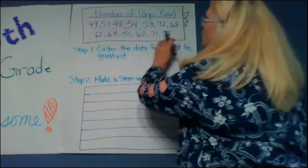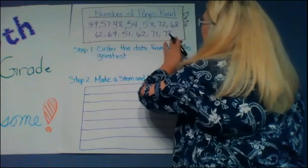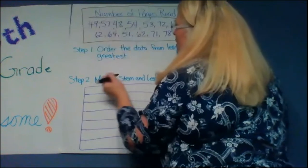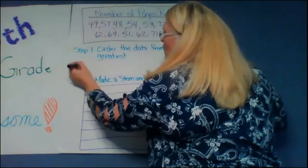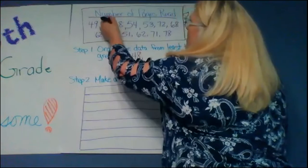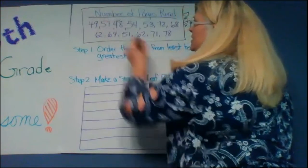So as I am looking here at my data I think 48 is my lowest. So I'm going to put 48 and I'm going to just kind of put a little check mark over it so I know I did it.